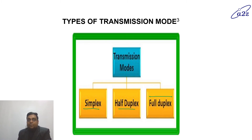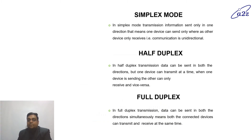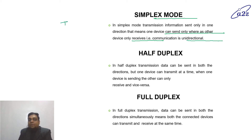In simplex mode, only one device can send and the other device will receive. Communication is unidirectional. An example is a TV tower or radio — your FM box will only receive signals from the tower. So this communication mode is called simplex.